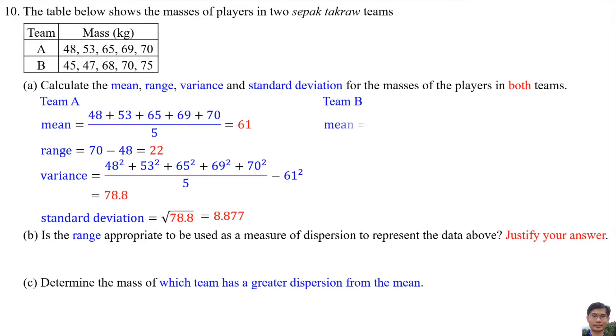Team B: The mean for Team B is the average of masses in Team B, so the mean is 61. The range for Team B is the maximum mass 75 minus the minimum mass 45, so the range is 30.